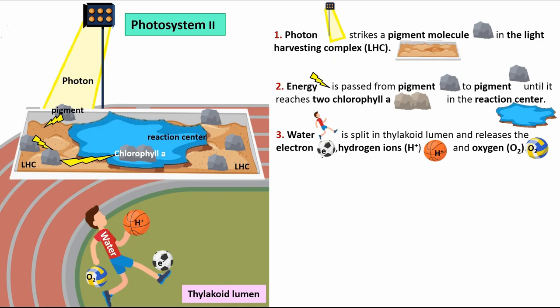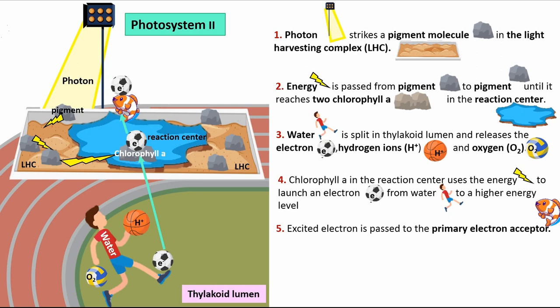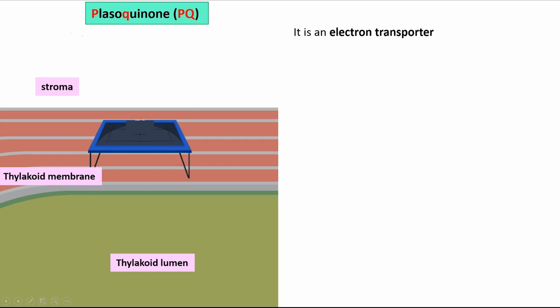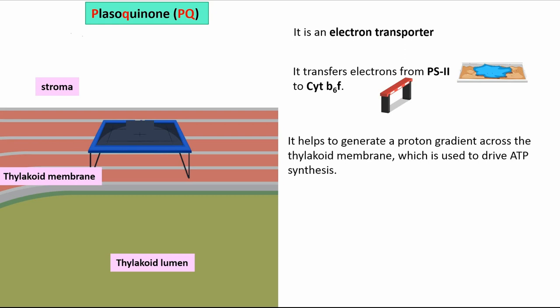Water is split in the thylakoid lumen and releases electrons, hydrogen ions, and oxygen. Chlorophyll A in the reaction center uses the energy to launch an electron from water to a higher energy level. The excited electron is passed to the primary electron acceptor. Across the thylakoid membrane, hydrogen ions are transported and oxygen goes into the external environment. Plastoquinone, or PQ, is an electron transporter that transfers electrons from Photosystem II to Cytochrome B6F, and helps generate a proton gradient across the thylakoid membrane which drives ATP synthesis.